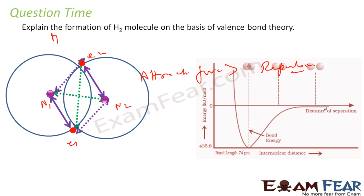This is the graph we have. If they are far apart, there is no energy. The moment it comes, at this point it has very low energy and then if you try to squeeze more, the energy increases. This is the point where it has minimum energy and it forms a bond.